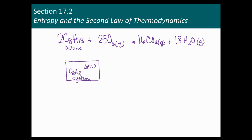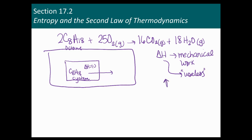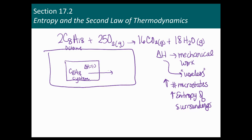This is exothermic, and for this process, some of the heat will go into mechanical work to turn the wheels of your car, but then some is useless for that and is transferred to the surroundings. What that does is it increases the number of microstates — the arrangements that the air molecules can have — and that's going to increase the entropy of the surroundings. So as heat flows into the surroundings, we see that for this exothermic process, there's an increase in the entropy of the surroundings.